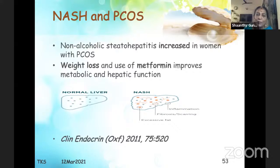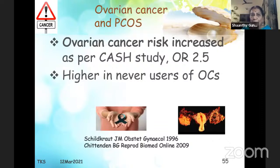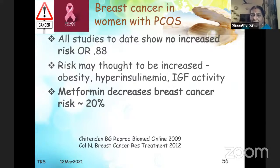Non-alcoholic steatohepatitis seems to be a cause of liver cell failure and is increased in women with PCOS — weight loss and metformin improve metabolic and hepatic function. Endometrial cancer risk is increased 2.7-fold due to dysregulation of the signaling pathway and progesterone resistance. Ovarian cancer risk is also increased, as per the CASH study — higher in never-users of OCPs, so using OCPs is likely protective. Breast cancer: no increased risk, though obesity, hyperlipidemia, and IGF activity were earlier thought to be risk factors. Metformin also decreases breast cancer activity.